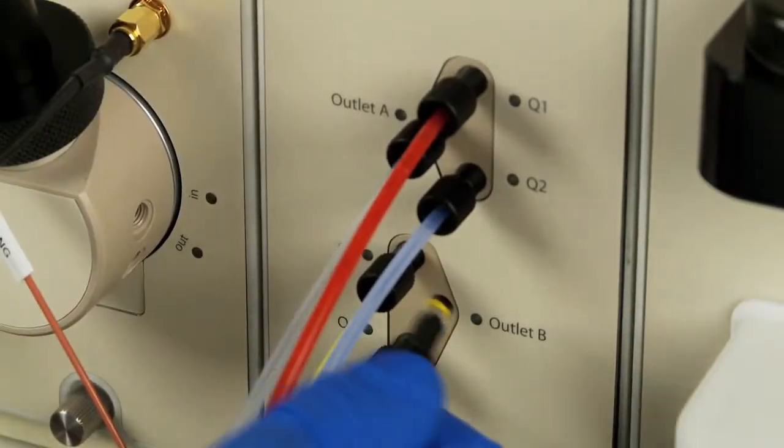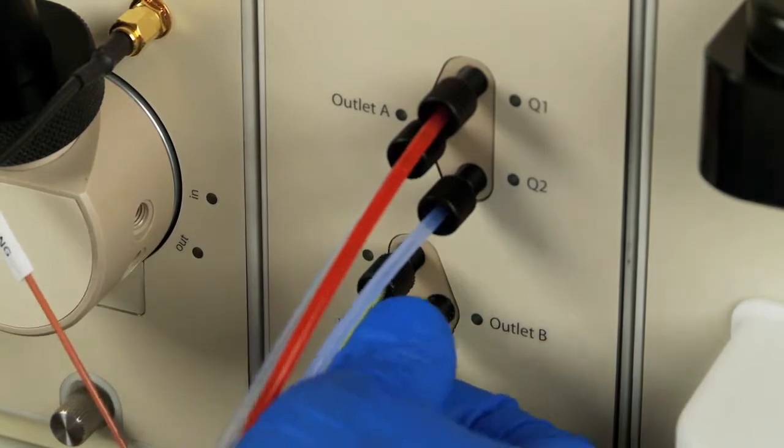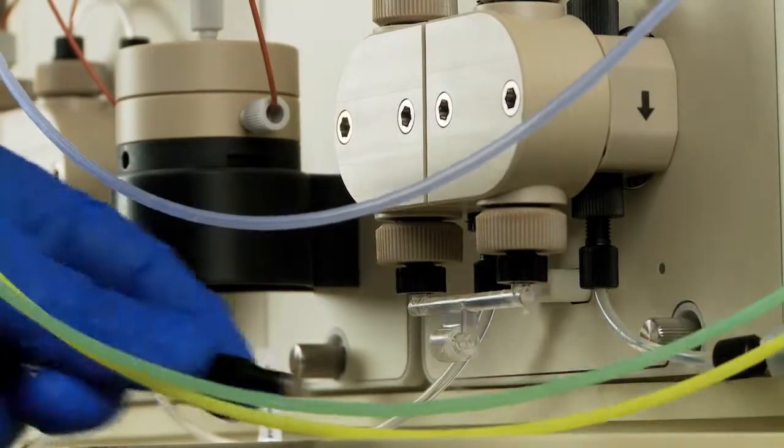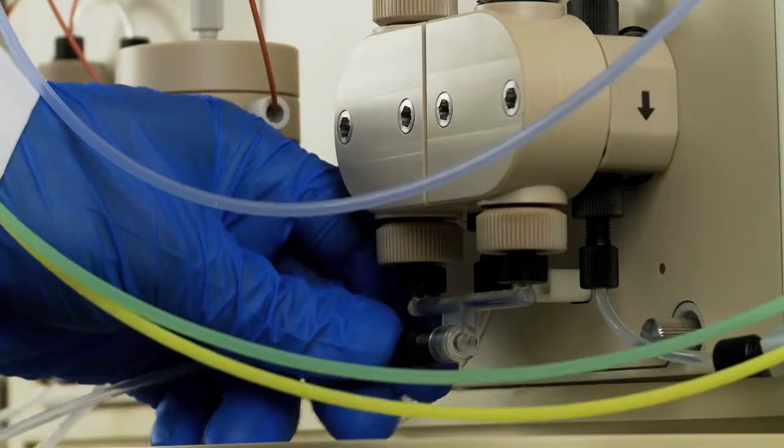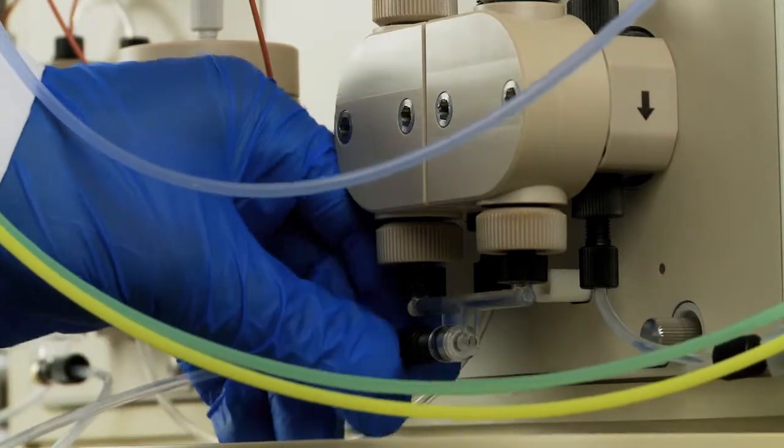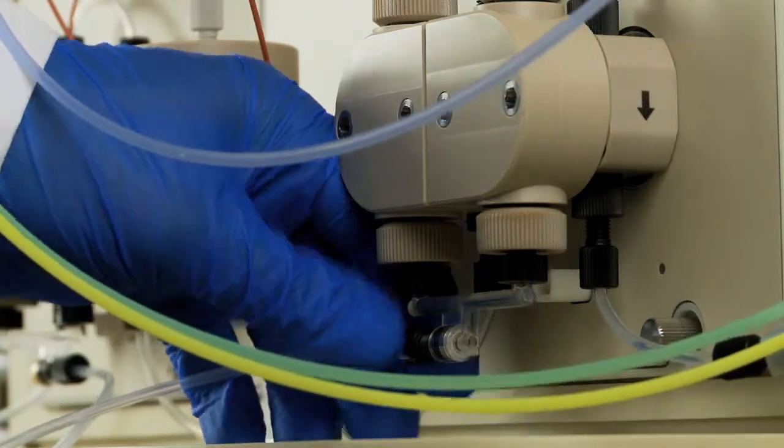Attach line Q outlet to port B on the buffer blending valve and then attach the other end to the inlet manifold on pump B. Securely tighten the fittings to ensure a proper seal and prevent buffer leaks.